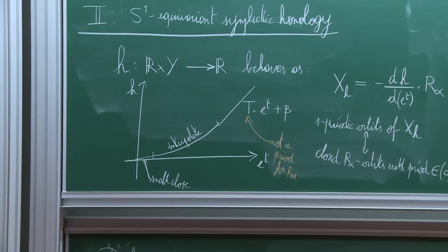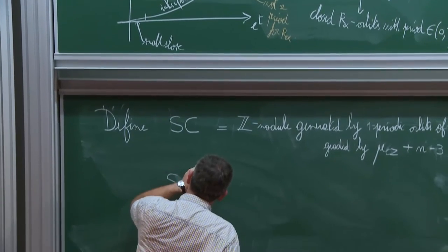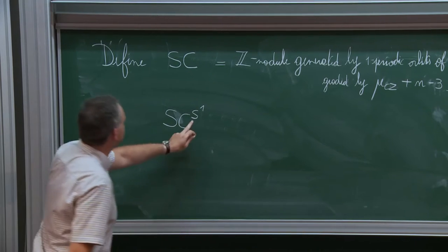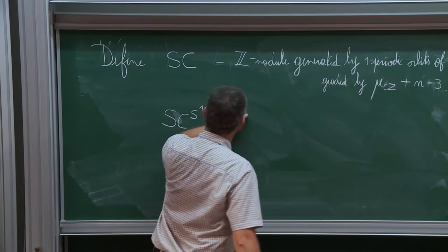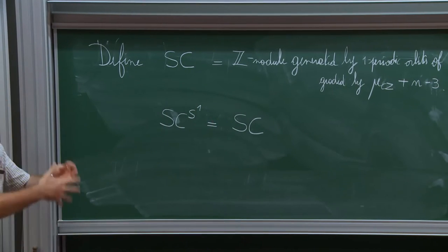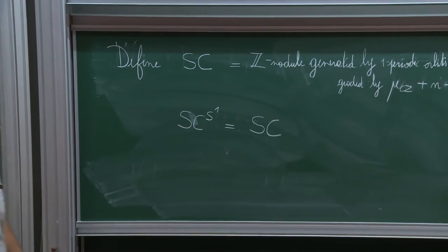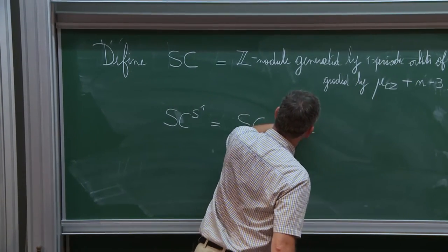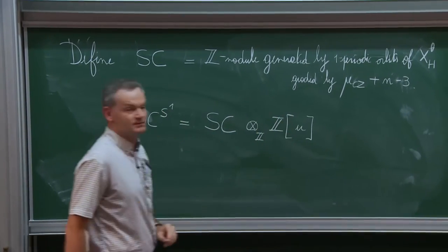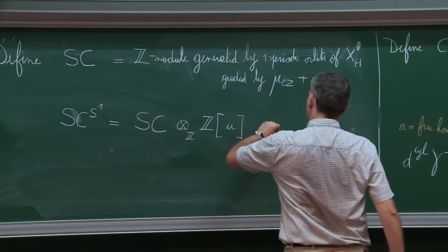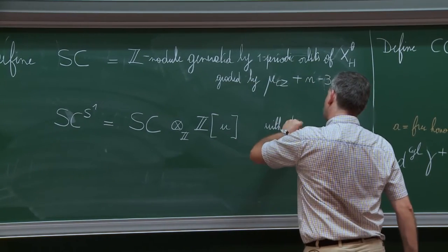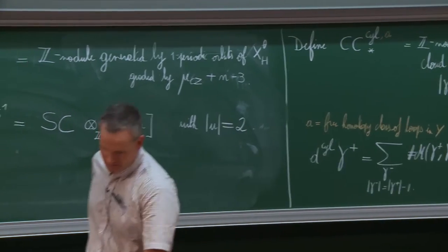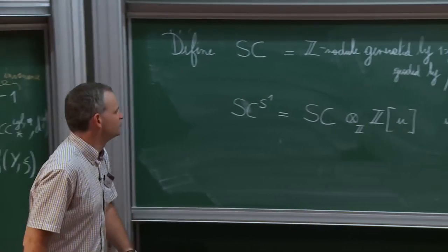That would be the complex for ordinary Floer theory, but we are going to do an S¹-equivariant version. The second layer is to define an S¹-equivariant version of the Floer complex, based on a different ℤ-module obtained by taking the usual ℤ-module tensored over ℤ with a polynomial ring in one formal variable U, which has degree |U| = 2.